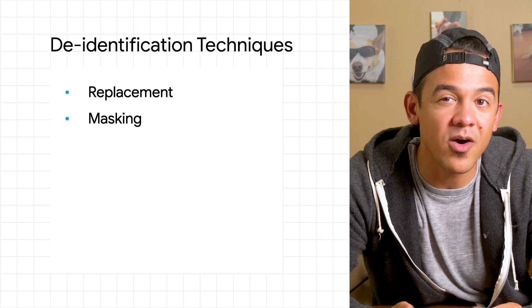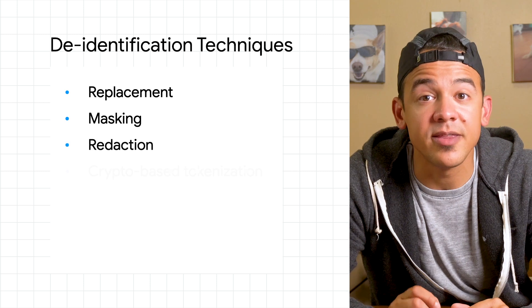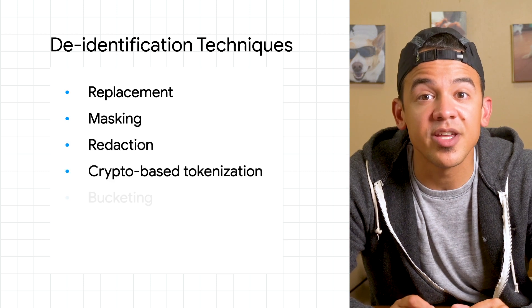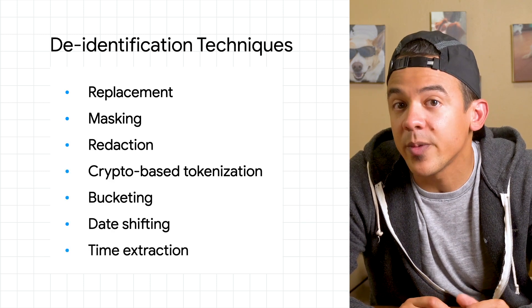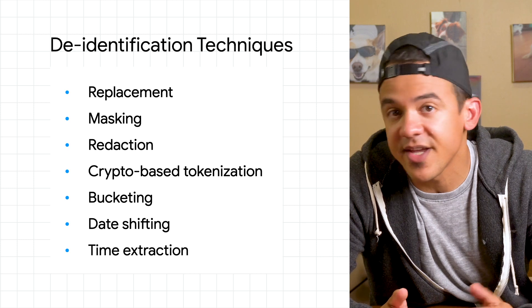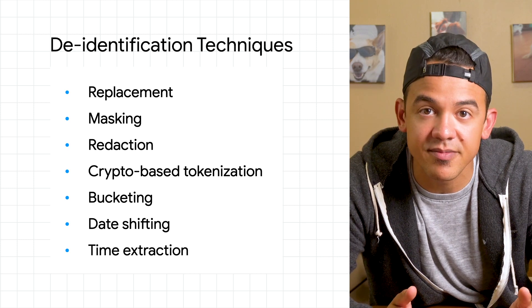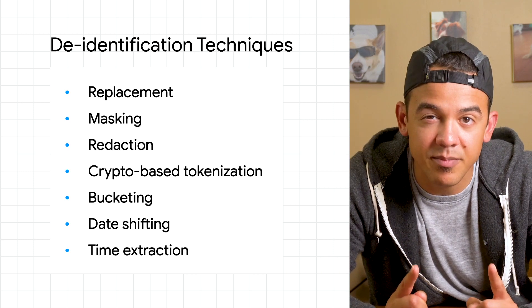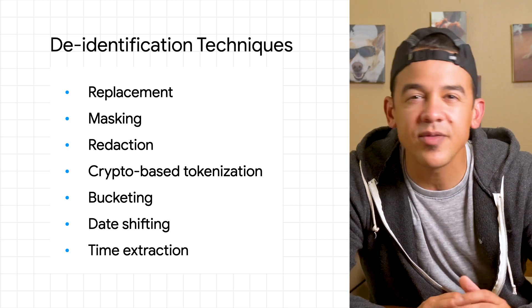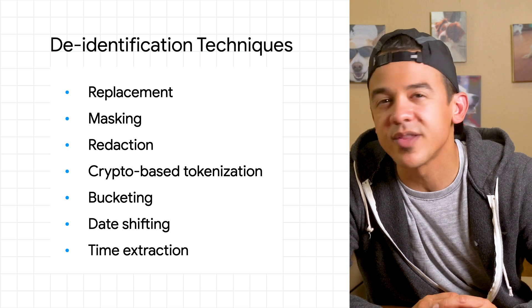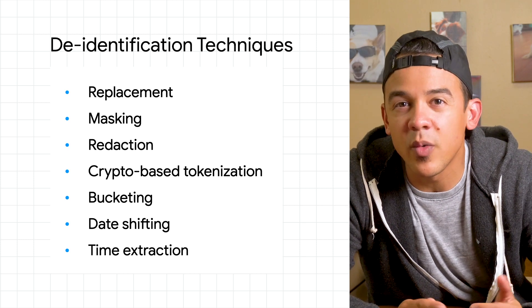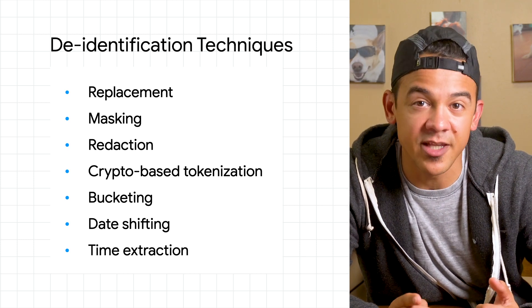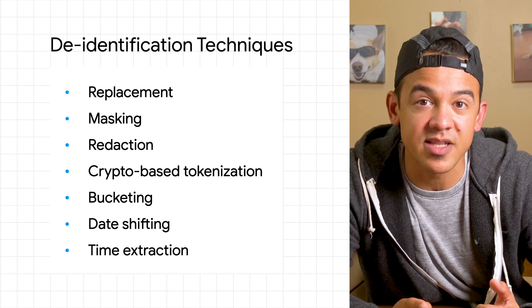By now you know that de-identification can be accomplished with a few different techniques, each with their own benefits and features. But you might wonder, how does DLP know what's what? How does it know when it spotted a phone number, for instance, in the data it processes, and how sure is it?